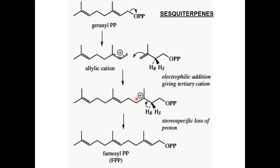The formation of sesquiterpenes generally proceeds via reaction of geranyl pyrophosphate with an additional isoprene. Electrophilic addition with a resonance-stabilized cation formed from geranyl pyrophosphate produces a tertiary cation. This tertiary cation undergoes a specific loss of a pro-R proton to form farnesyl pyrophosphate, which is the precursor of all sesquiterpenes in plants.